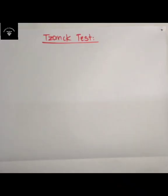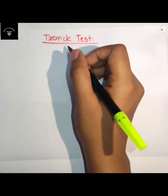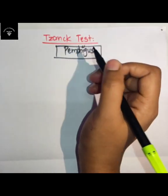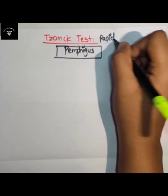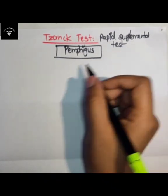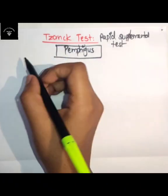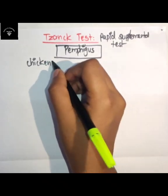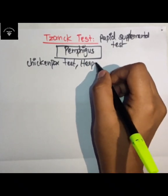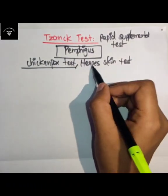Let's see what is the Tzanck test. The Tzanck test is a rapid supplemental test done for pemphigus. This test is also known as the chickenpox skin test and the herpes skin test.